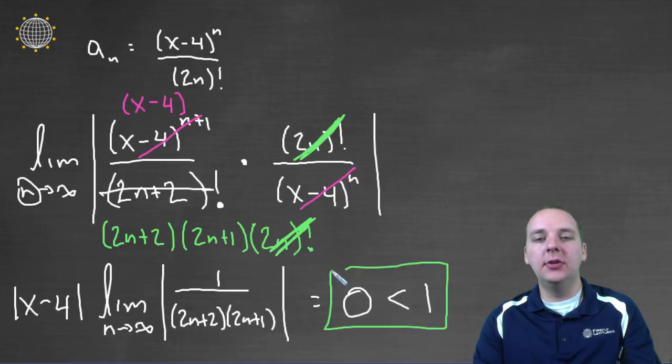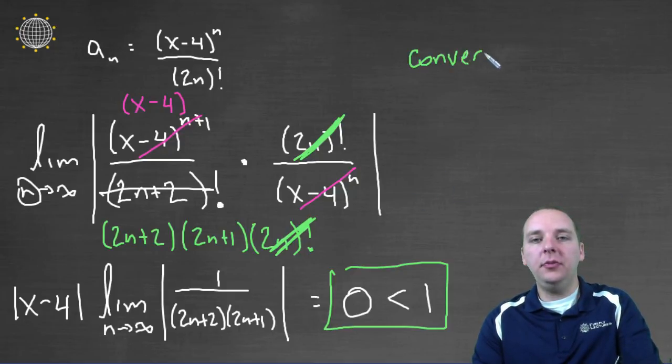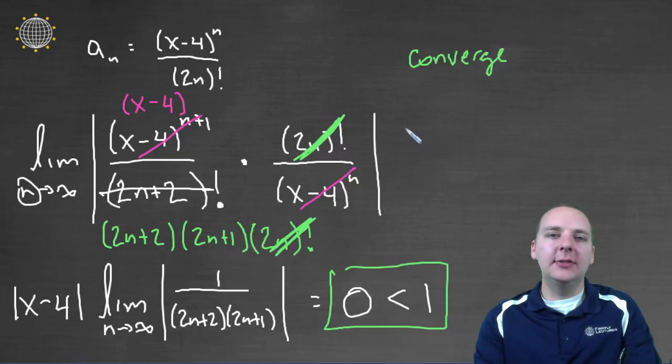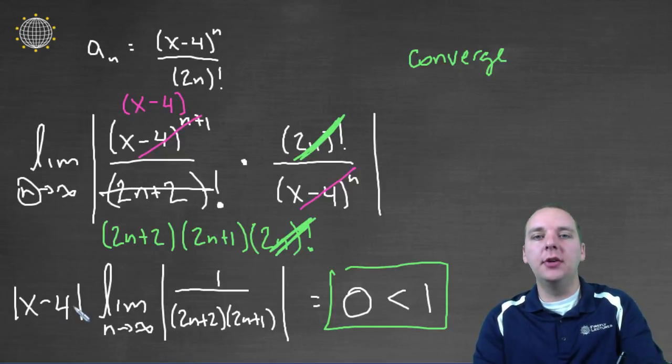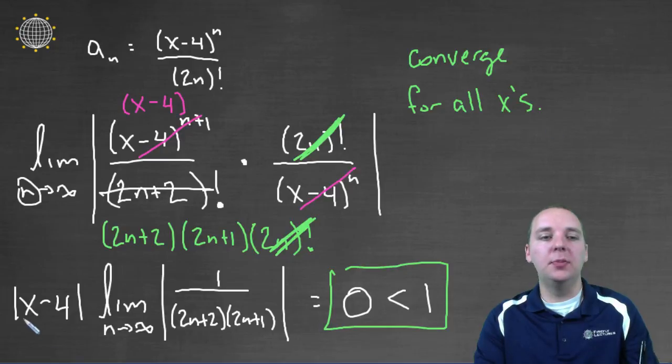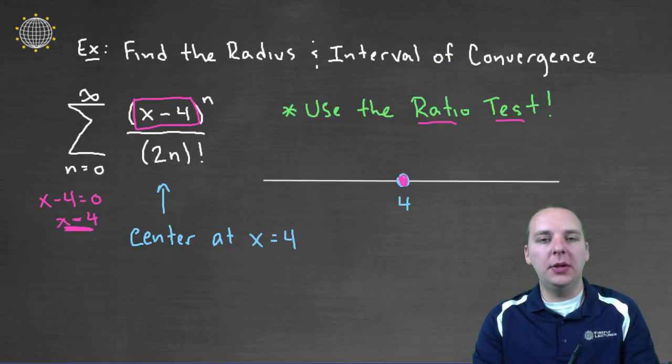So what does that mean exactly? Well first of all, I do realize that this is good news. Zero being less than one means that this series on the previous page, this will converge. But again, it's funny that I haven't talked about what specific x is. Well it turns out it converges for all x's, right? It converges for every x, because you can pick any x, and then when you multiply it times zero, you get zero, which is always less than one.